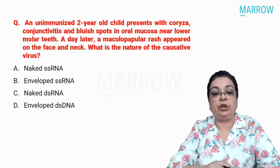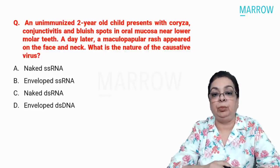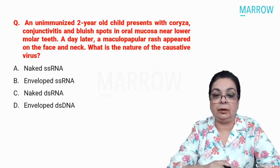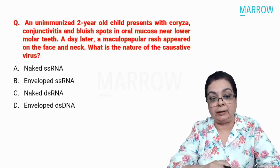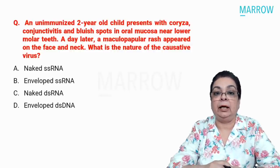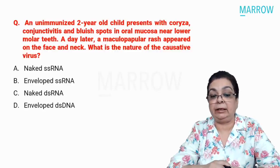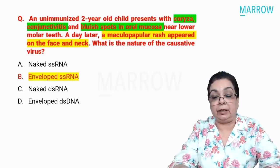Question 1: An unimmunized two-year-old child presents with coryza, conjunctivitis, and bluish spots in the oral mucosa near the lower molar teeth. A day later, a maculopapular rash appeared on the face and neck. What is the nature of the causative virus? Options: naked single-stranded RNA, enveloped single-stranded RNA, naked double-stranded RNA, or enveloped double-stranded DNA. The answer is enveloped single-stranded RNA virus.